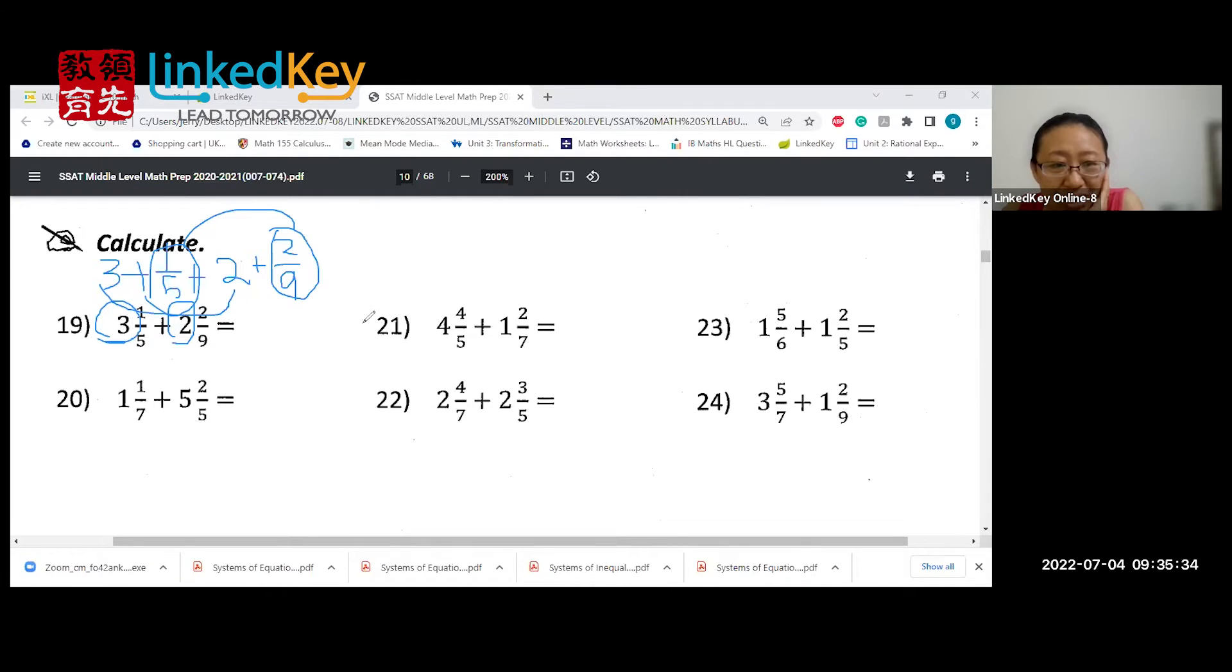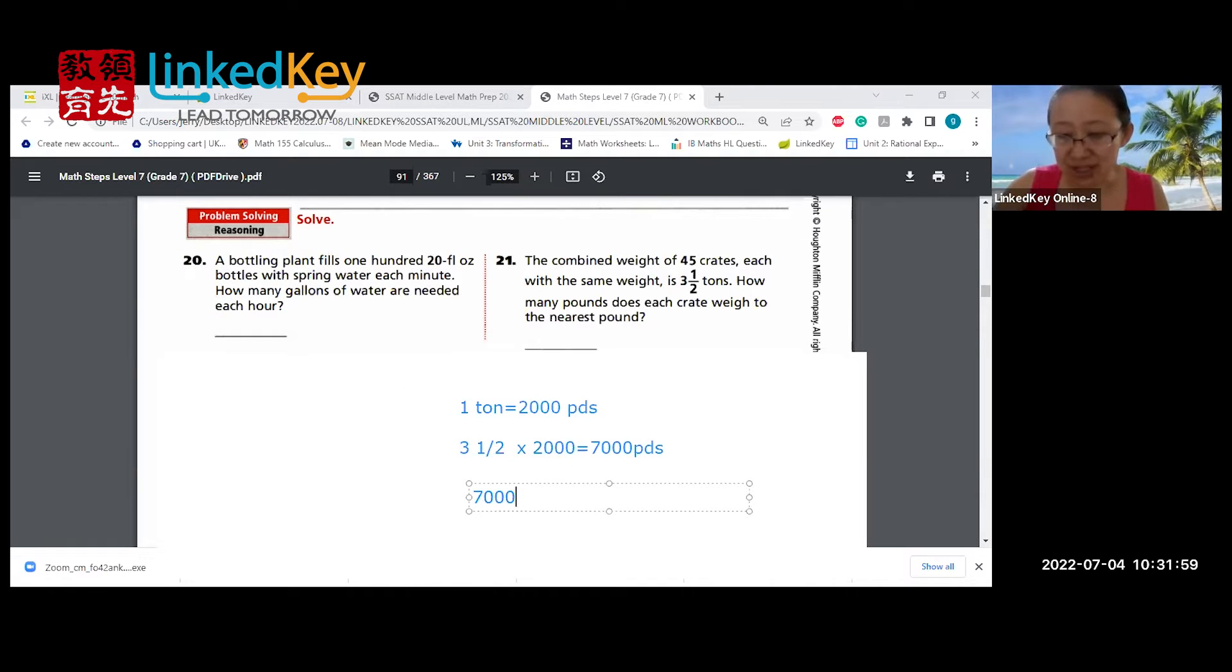Let's work on 27,000 divided by 45, and we have to show it in the fraction way.